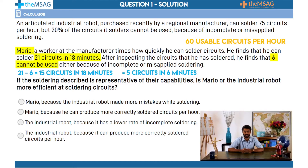Multiplying by 10 to get to the same time period as the robot, we get 50 circuits in 60 minutes, which is an hour. Therefore, the robot, who can solder 60 good circuits in an hour, is more efficient and better suited to the task.